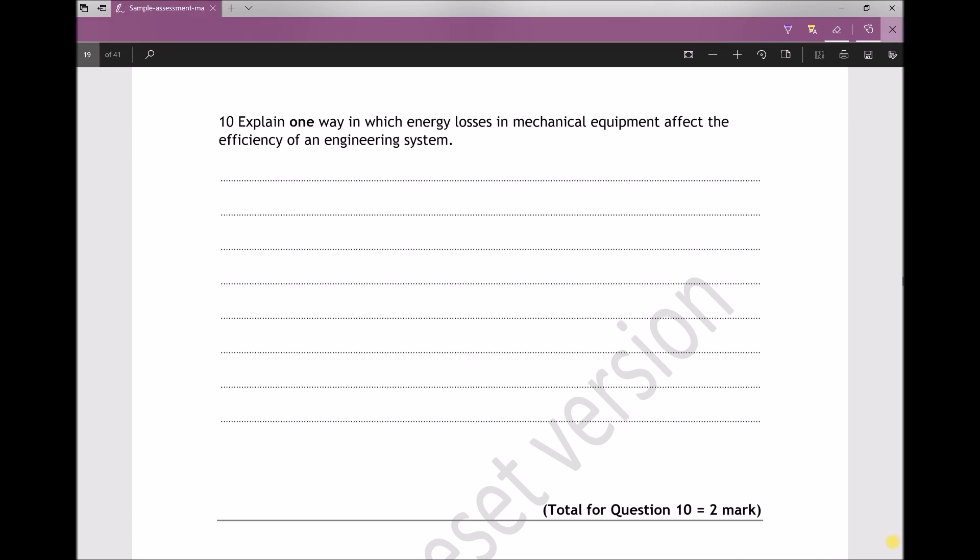Let's highlight a couple of important things. First, it says 'explain' and the question's worth two marks, so we're looking for two distinct points. It mentions mechanical equipment and links that to the overall efficiency of an engineering system.